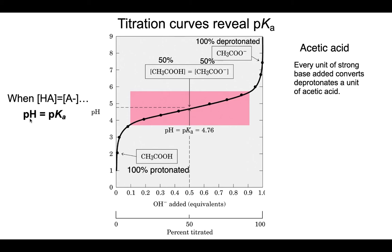So how do we figure out the pKa from this graph? We know 100% protonated, 100% deprotonated — go to half of the equivalents, go up until you hit the curve, go over to see what the current pH is. That current pH is about 4.76, which means the pKa of acetic acid is 4.76.